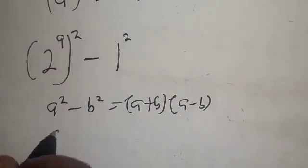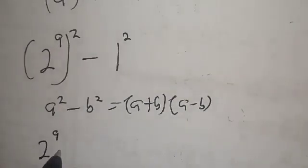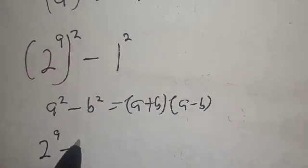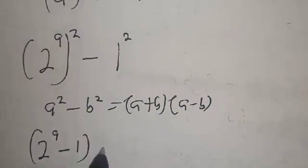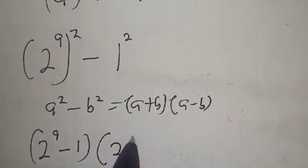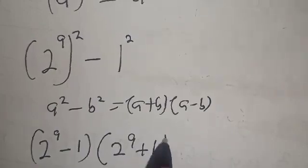Now 2^9 minus 1, multiply by 2^9 plus 1.